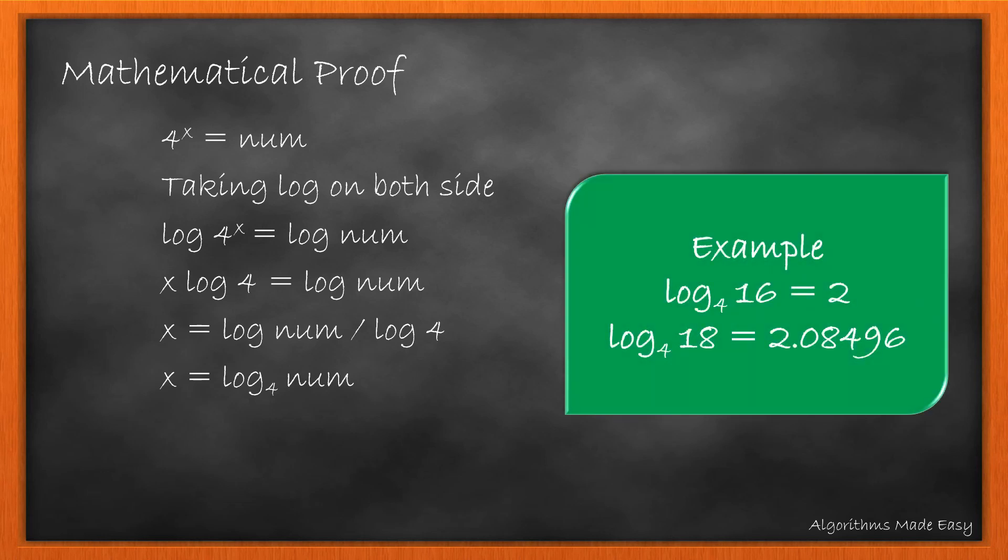In the example, we can see that if X is a whole number, the number would be exact power of 4, while if the number is not exact power of 4, the value of X will not be a whole number. We can use this property to find if the number is power of 4.